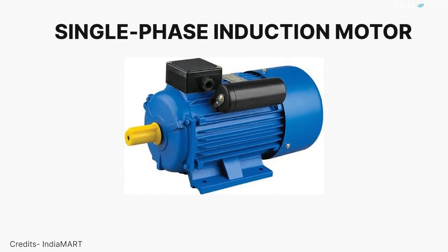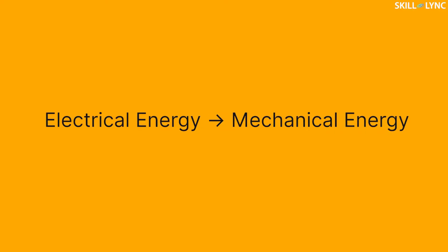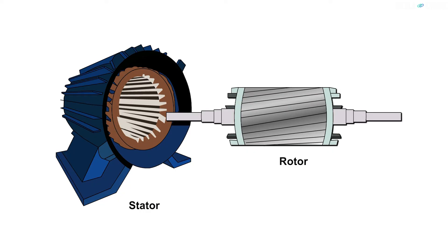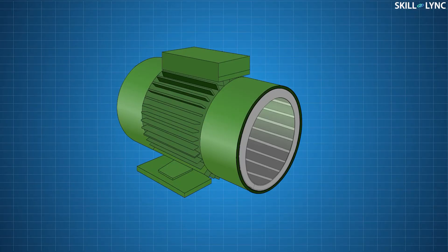The single phase induction motor converts electrical energy into mechanical energy. It consists of two parts, namely stator and a rotor. The stator is a stationary part of the motor. It has laminated sheets that are provided with holes.